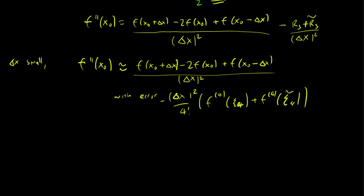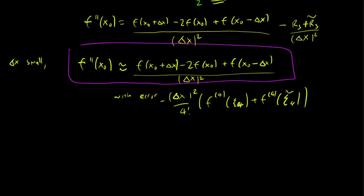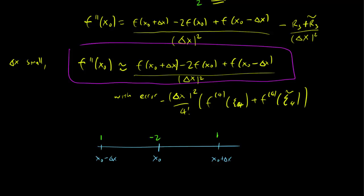It's very often useful to write this geometrically. What this says is that you can find the second derivative of a function by looking at the function's value at x0, at x0 plus delta x, and at x0 minus delta x. Specifically, you take 1 times the value at x0 minus delta x, minus 2 times the value at x0, plus 1 times the value at x0 plus delta x. This gives us information about how to find approximate values of the second derivative.